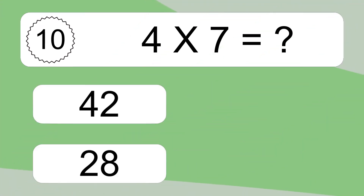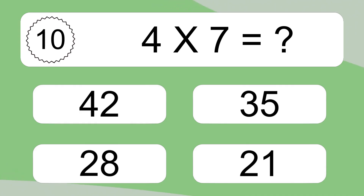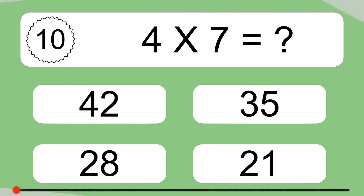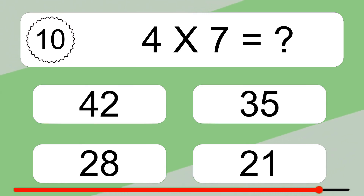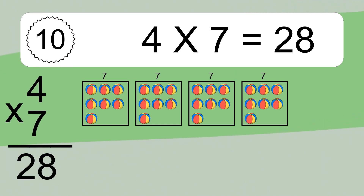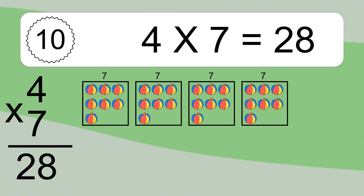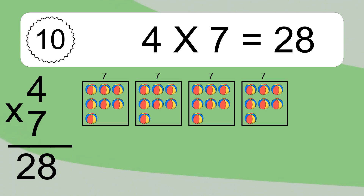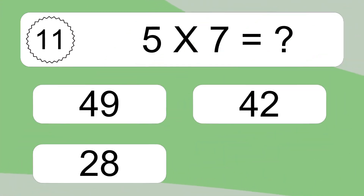4 times 7 equals what? 4 times 7 equals 28. We have 4 boxes, and each box has 7 colorful balls inside. If you count all the balls in all the boxes together, you will have 4 times 7 balls. This equals 28 balls.